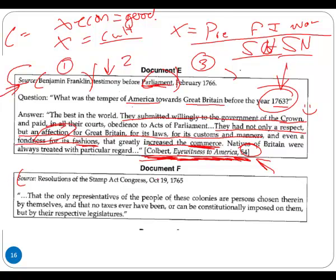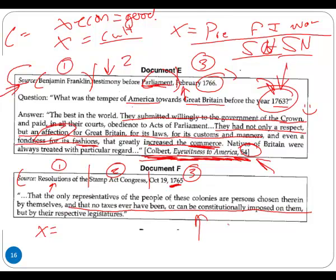Moving to the Resolutions of the Stamp Act Congress. Put down: one, resolutions — these are the results of a governing body; two, Stamp Act Congress; three, your year. Notice the transition: 1766 is the testimony asking about 1763, now we're jumping to 1765. We're moving around a bit, but establishing a theme — the evolution of discontent. The contextual message addresses: only representatives chosen by the people can impose taxes, and no taxes have ever been or can constitutionally be imposed on them without their consent. This addresses taxation without representation.